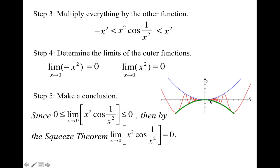And this is what the graph of these two functions would look like. Here is negative x squared, positive x squared, and here is our function. As you can see, it is being squeezed or pinched between the two parabolas.